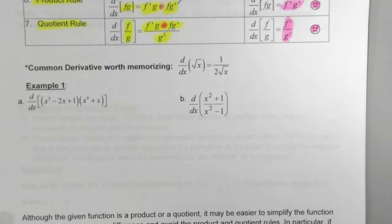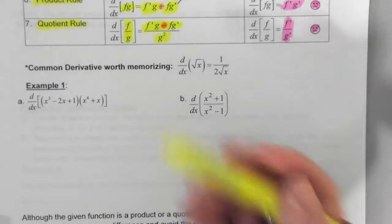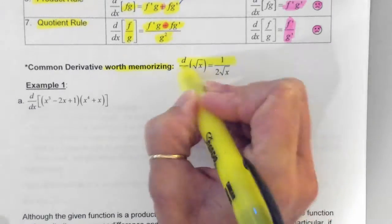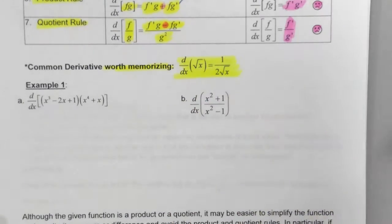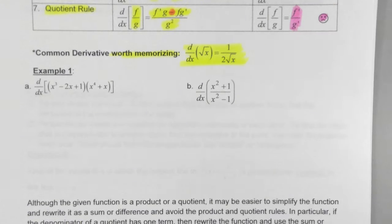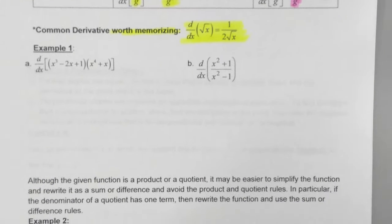So again, these need to be committed to memory. They are on your concept cards, but we're going to demonstrate here. So, one derivative that is going to come up a lot is the derivative of the square root of X. This is definitely worth memorizing, and the derivative of the square root of X is 1 over 2 square root of X. It shows up a lot.